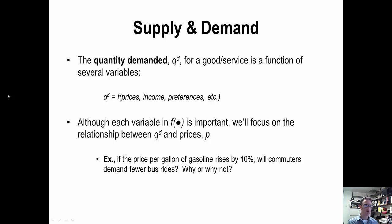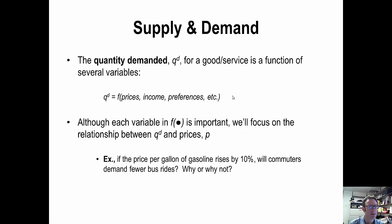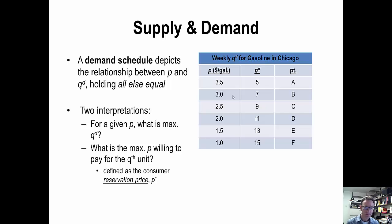Income also plays a role in determining quantity demanded, as do tastes and preferences, as well as many other variables. At this stage, we're going to focus exclusively on prices and elaborate later on.